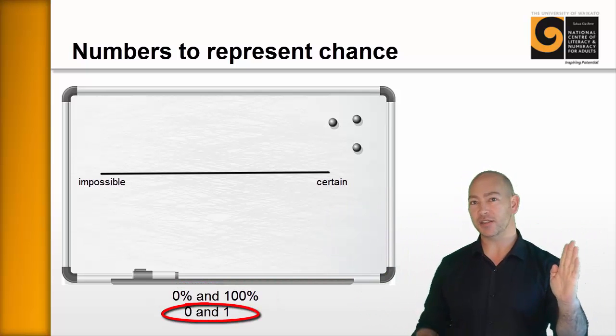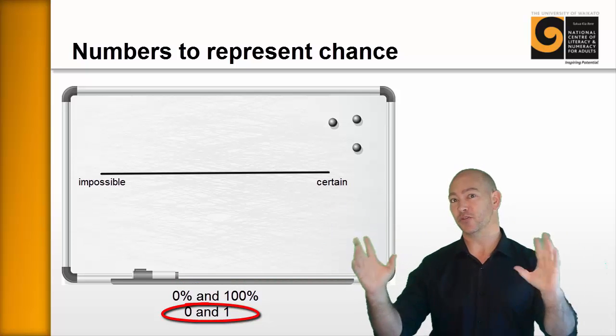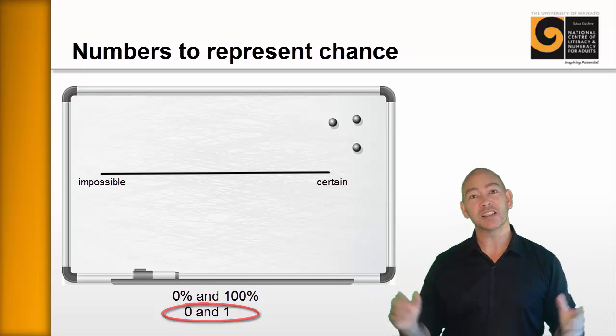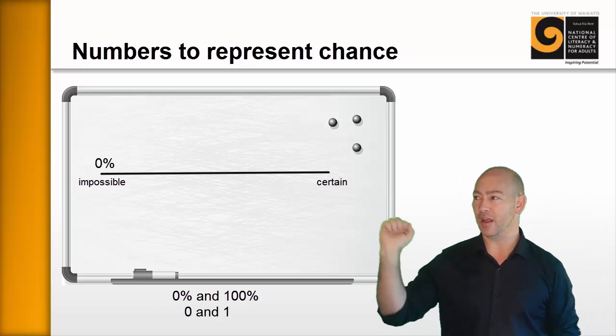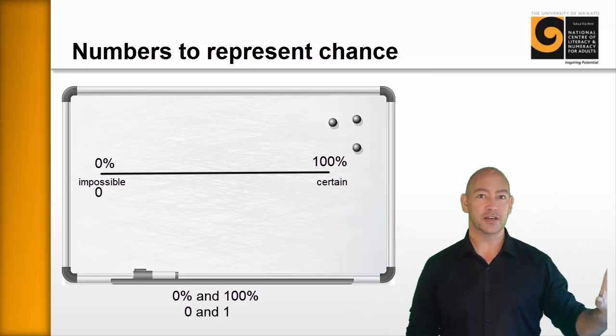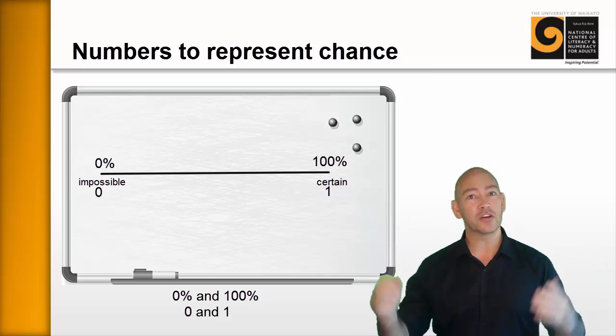Or a 0 chance and a 1 chance, somewhere in between. And then ask them where they think on that continuum a 0% chance would fit, and a 100% chance, or a 0 and a 1. And just write those in on the board.